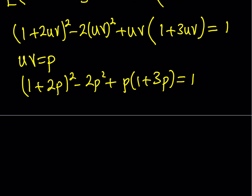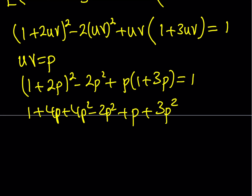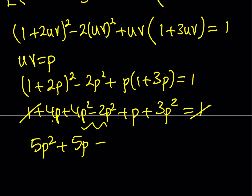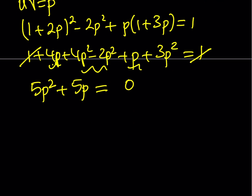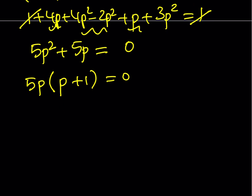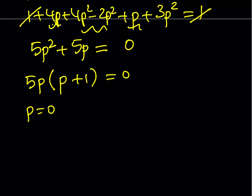Let's go ahead and solve for p. This expands to 1 plus 4p plus 4p squared minus 2p squared plus p plus 3p squared equals 1. Combining like terms: 5p squared plus 5p equals 0. The 1s cancel, which is nice. Factoring out 5p gives us p times p plus 1 equals 0, so we get two values: p equals 0 and p equals negative 1.